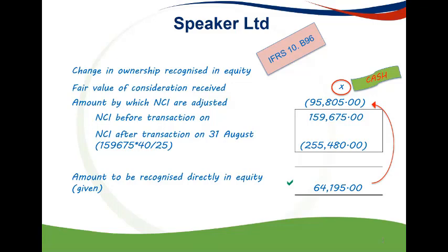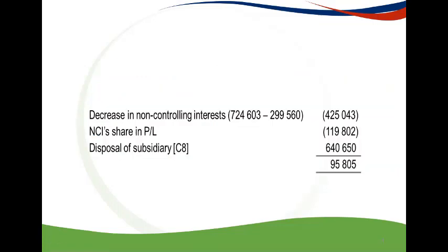To calculate the adjustment to NCI, the carrying amount of NCI for Speaker Limited at the date of partial sale is used. This amount is multiplied by the new NCI percentage over the old — remember, it's what we want over what we have. The amount arrived at is the value that the new NCI carrying amount should be. Therefore, the difference between this carrying amount and the amount before the transaction is the actual portion that NCI attained as a result of the disposal. The values for NCI have been given, and therefore a time-saving approach is to use the figures given in the scenario.